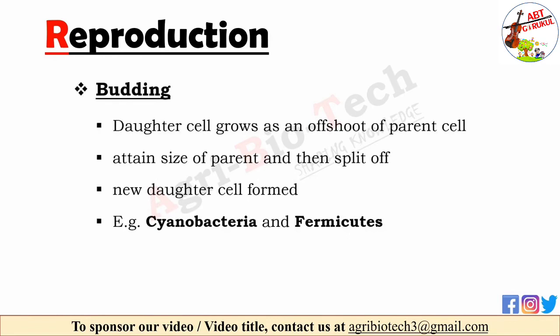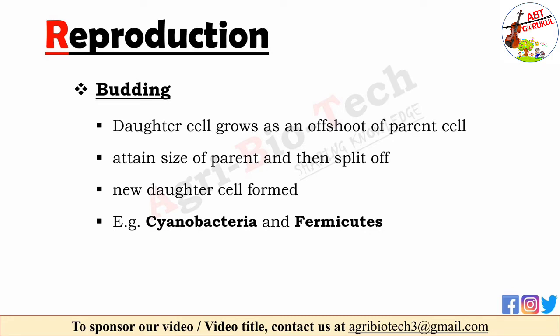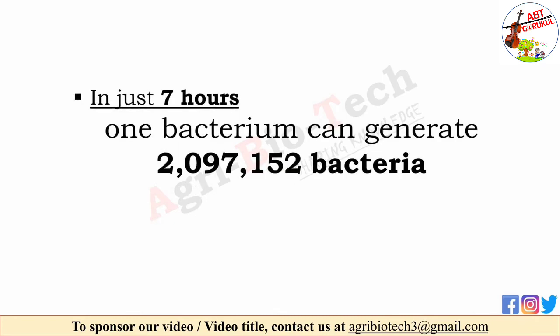Some bacterial species, such as cyanobacteria and firmicutes, reproduce via budding. During budding, the daughter cell grows as an offshoot of the parent cell — it starts off as a small nub and grows until it attains the same size as its parent. When the cell matures, it splits off and forms a new daughter cell. In this way bacteria replicate from 1 to 2, 2 to 4, 4 to 8, and so on. When conditions are favorable, some bacteria like E. coli can divide every 20 minutes, meaning that in just 7 hours, 1 bacterium can generate 2,097,152 bacteria.